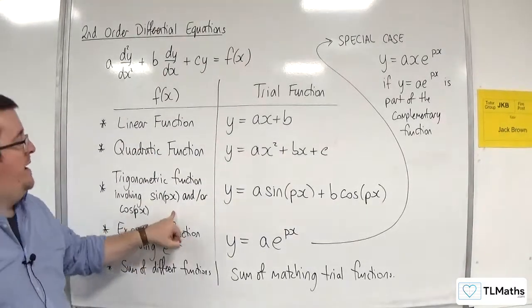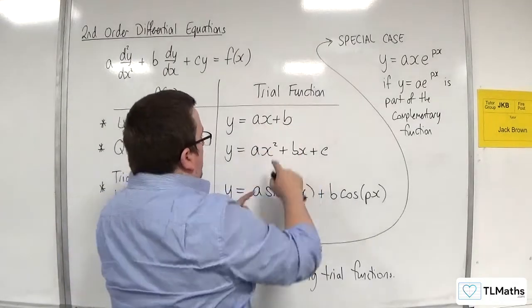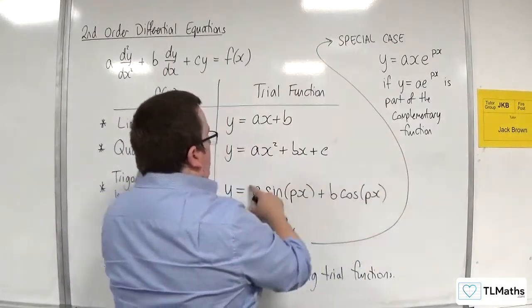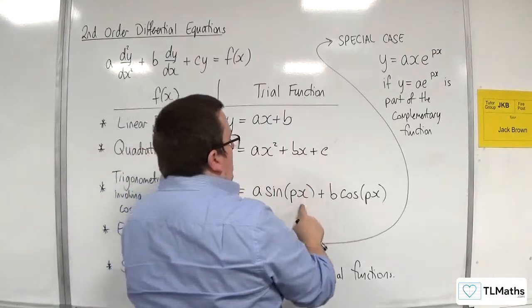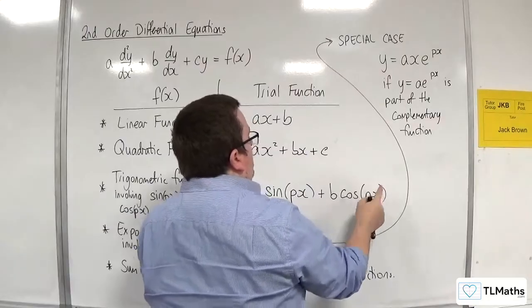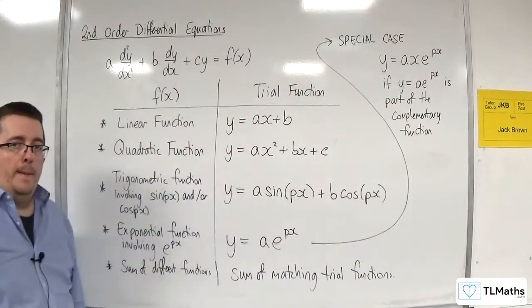then I would need ax plus b plus one of these as well. So I'd have ax plus b plus c sine of px plus d cosine px.